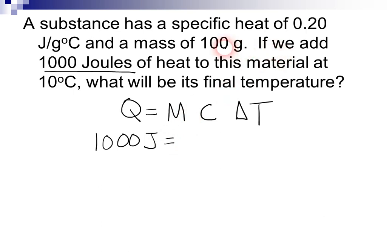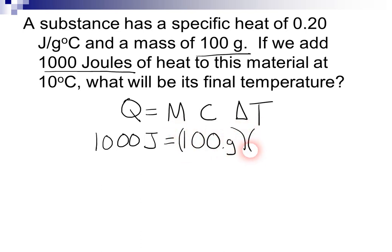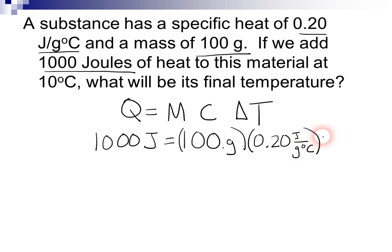M is the mass, and it says it has a mass of 100 grams — so we'll plug 100 grams into the equation. It does tell us what the specific heat is: 0.20 joules per gram degree Celsius, so I will plug that in for C. This time, we don't know what the change in temperature is. We know what the starting temperature is — it's 10 degrees Celsius — but we don't know what the final temperature is. So let's solve for delta T.